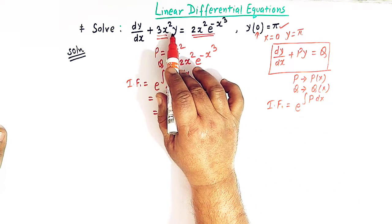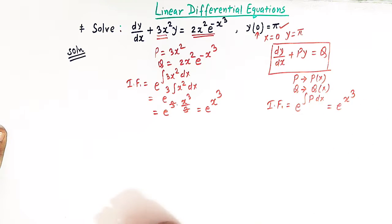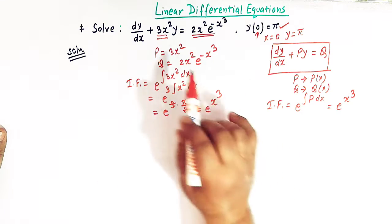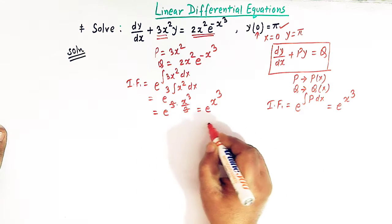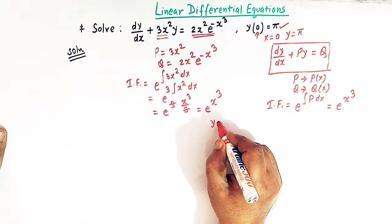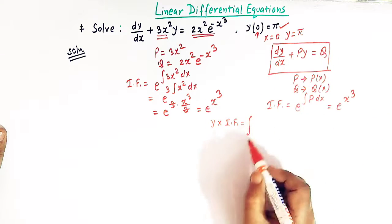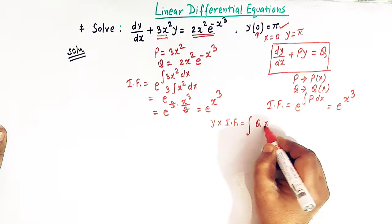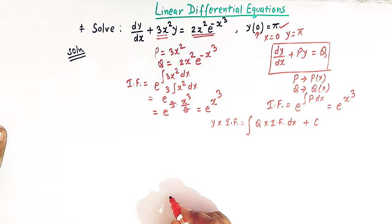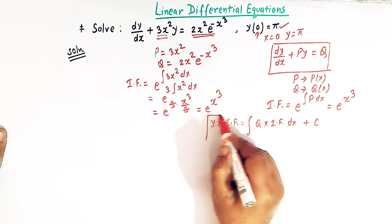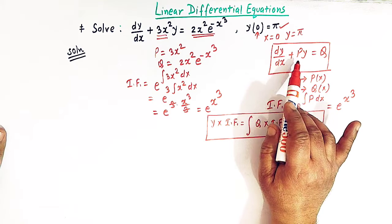So the integrating factor of this linear differential equation is e^(x³). The solution is given by: y × (integrating factor) = integral of Q × (integrating factor) dx + c, where c is the constant of integration.